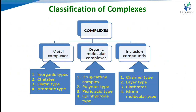The classification of complexation includes three types: metal complexes, organic molecular complexes, and inclusion or occlusion complexes. Metal complexes are further classified into inorganic type, chelates, olefin type, and aromatic type. Organic molecular complexes include quinhydrone, caffeine-picric acid, and polymeric complexes. Inclusion complexes are further classified as channel type, layer type, clathrate, and monomolecular type.